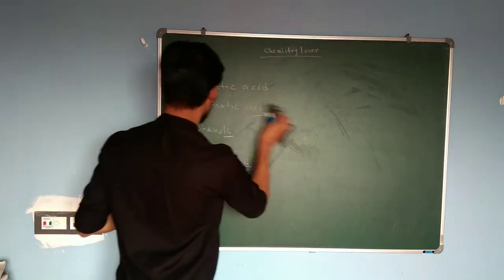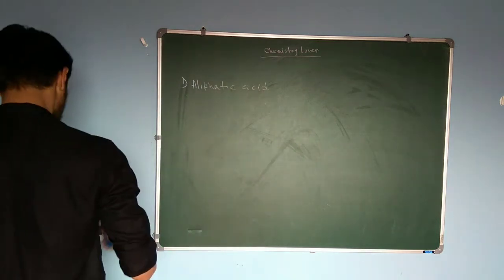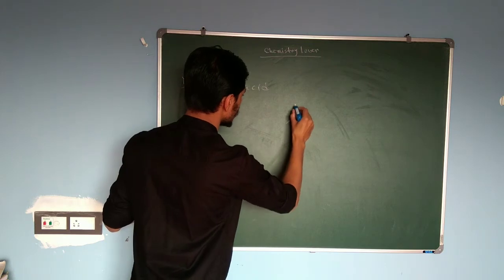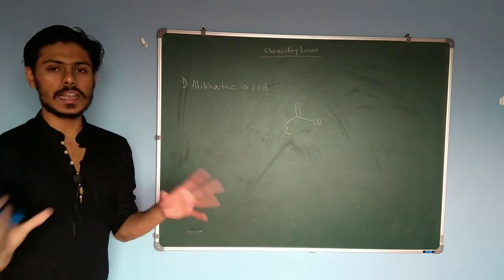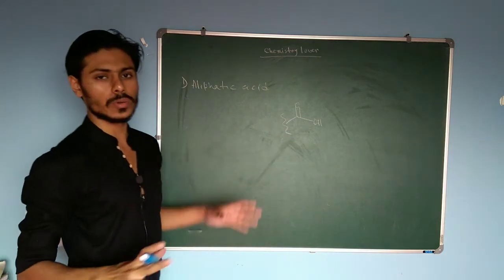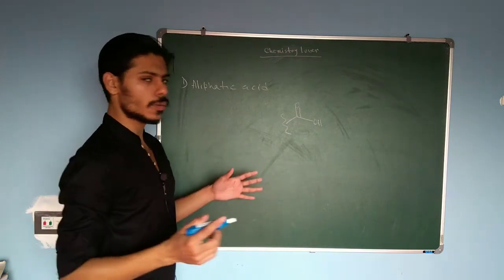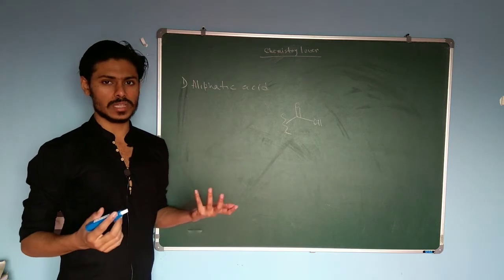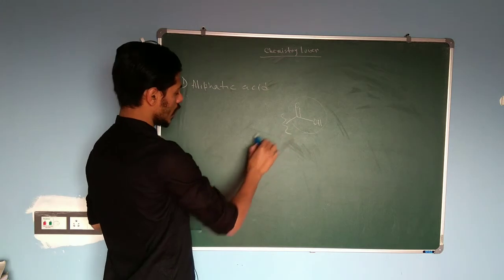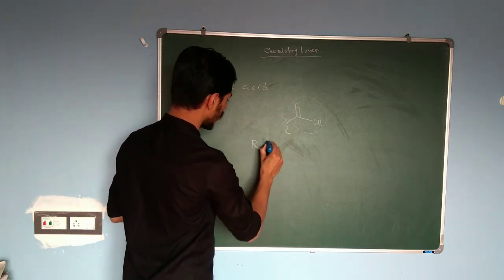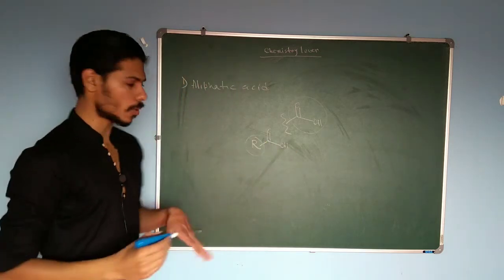The first case is aliphatic acids — aliphatic carboxylic acids. The carboxylic acid group is C double bond O and OH. Any aliphatic compound containing this group we consider an aliphatic carboxylic acid. The main group is the same in all cases, but the R group varies and based on that the acidity changes.